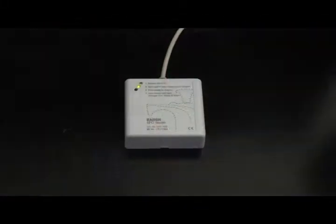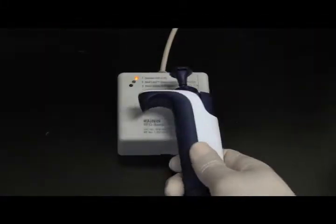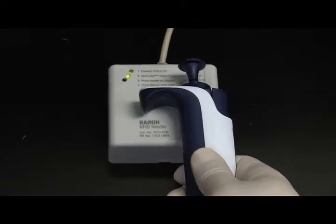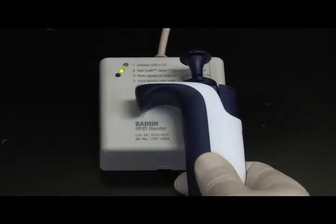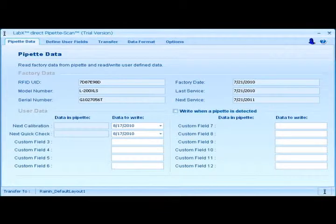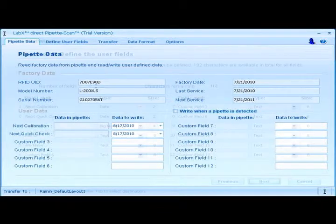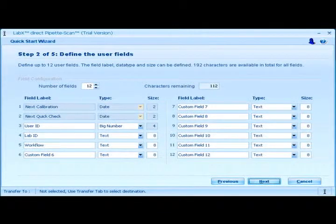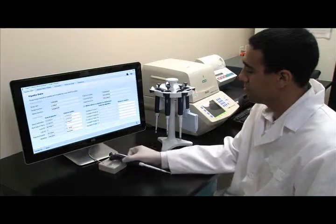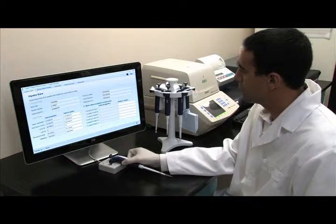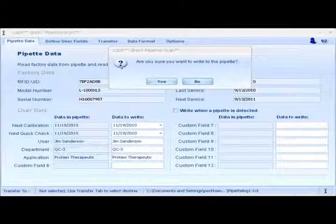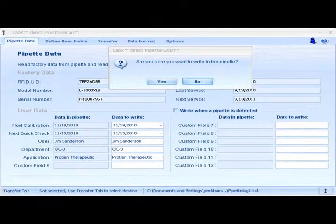Instantly view calibration and workflow data for any XLS pipette by scanning it with the RFID reader. With 12 customizable fields, LabX complements your workflow by tracking compliance and reporting attributes that are most important to you. To update the pipette's RFID tag, simply place it back on the RFID reader and click Write within the LabX application.